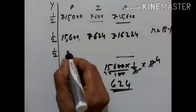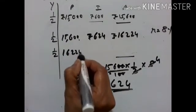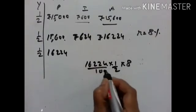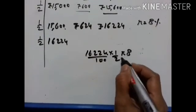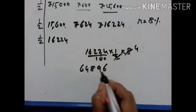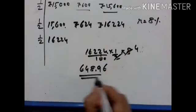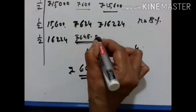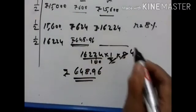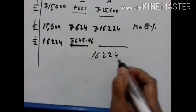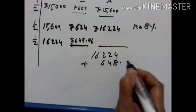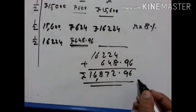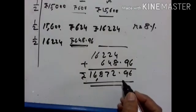Rs. 16,224 becomes the principal for the next half year. P × T × R upon 100 gives Rs. 648.96, which is the interest for the third half. The amount is equal to Rs. 16,224 plus Rs. 648.96, equal to Rs. 16,872.96. That is the total amount of money that Gita must pay at the end of 18 months in order to clear the account.